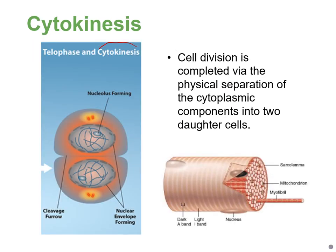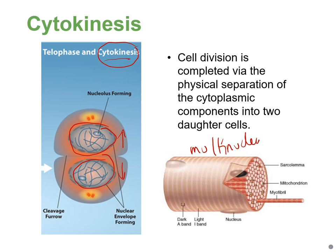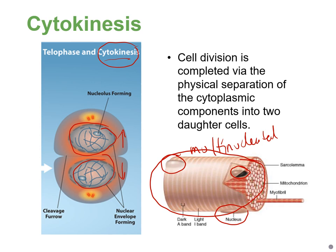Cytokinesis is division of the cytoplasm — everything in the cytoplasm is divided approximately in half. In some cases, cells go through mitosis but not cytokinesis, creating multinucleated cells. This happens, for example, in skeletal muscle cells — the muscles that allow you to move. In those multinucleated cells, mitosis happened but cytokinesis did not.